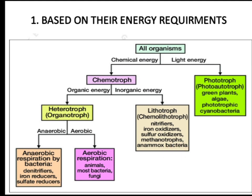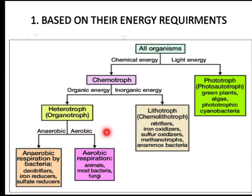Heterotrophs use energy originating from organic compounds, and are again classified into aerobic and anaerobic according to the use of oxygen. Examples of aerobic heterotrophs or organotrophs are animals, most bacteria, and fungi. For anaerobic respiration by bacteria, examples are nitrifiers, iron reducers, and sulfate reducers.